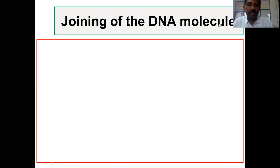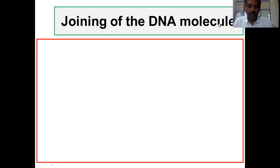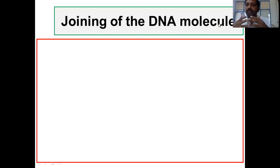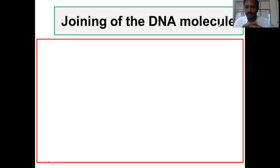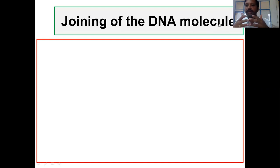Welcome to DNA Deeds YouTube channel. In the previous lectures we learned how to generate DNA fragments. Now we must consider what are the different strategies or methods we have to join them and create artificially recombinant DNA molecules. Joining is a very critical step in molecular cloning. There are three ways to join them, which will be discussed in this lecture.